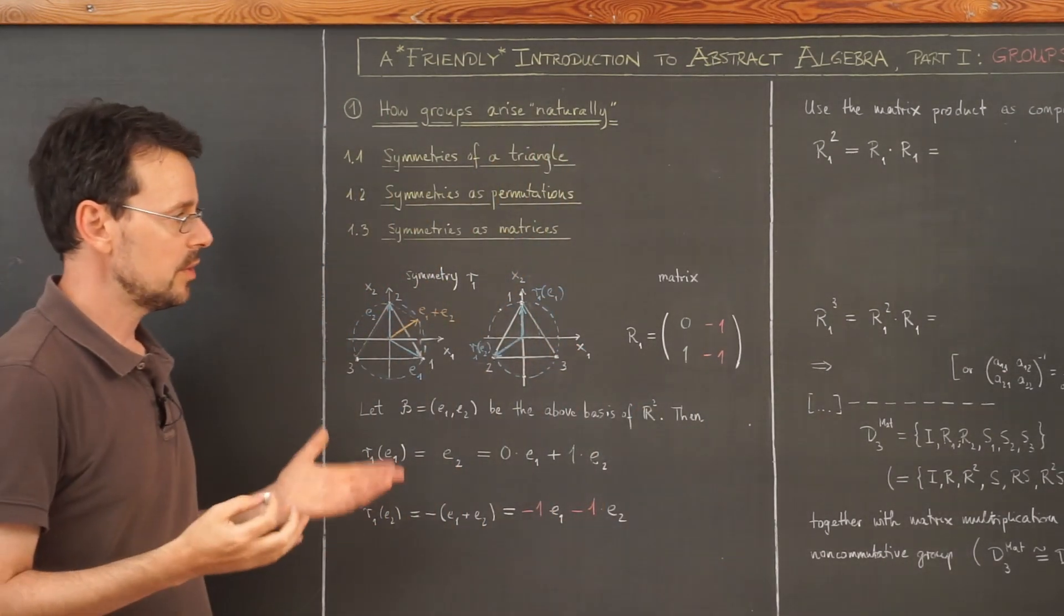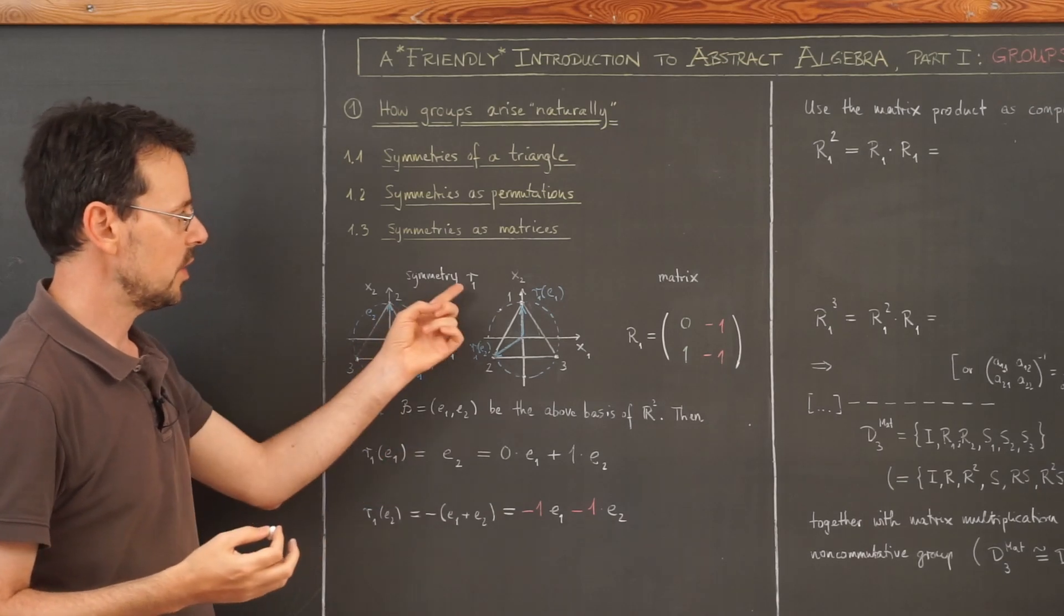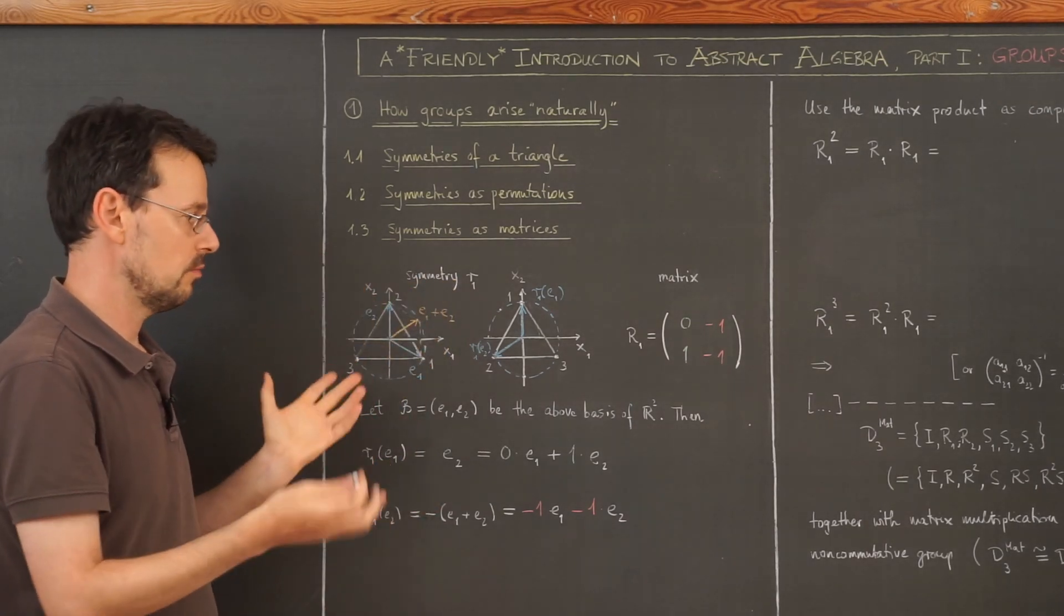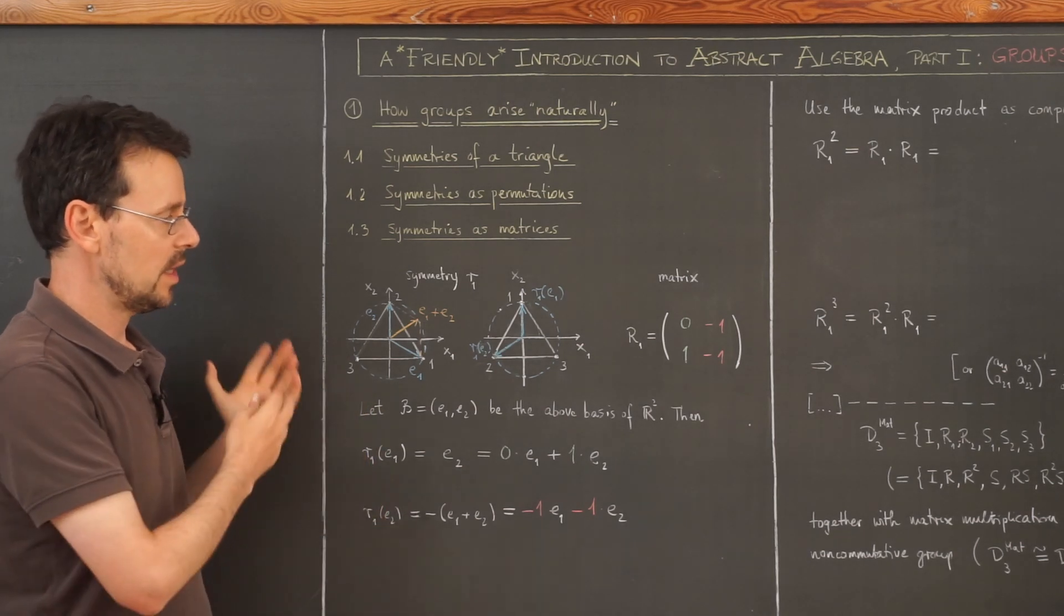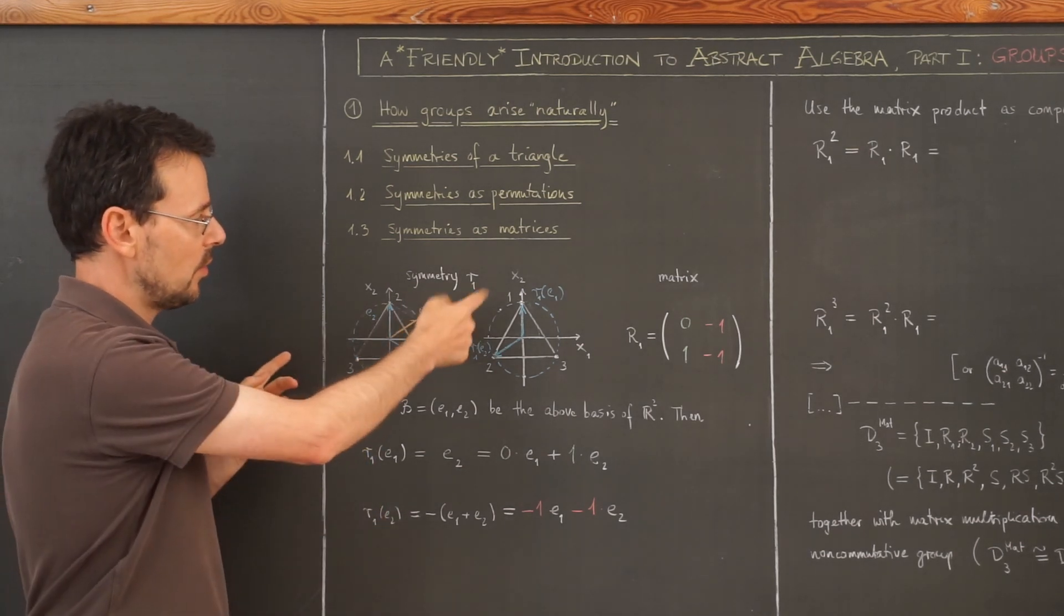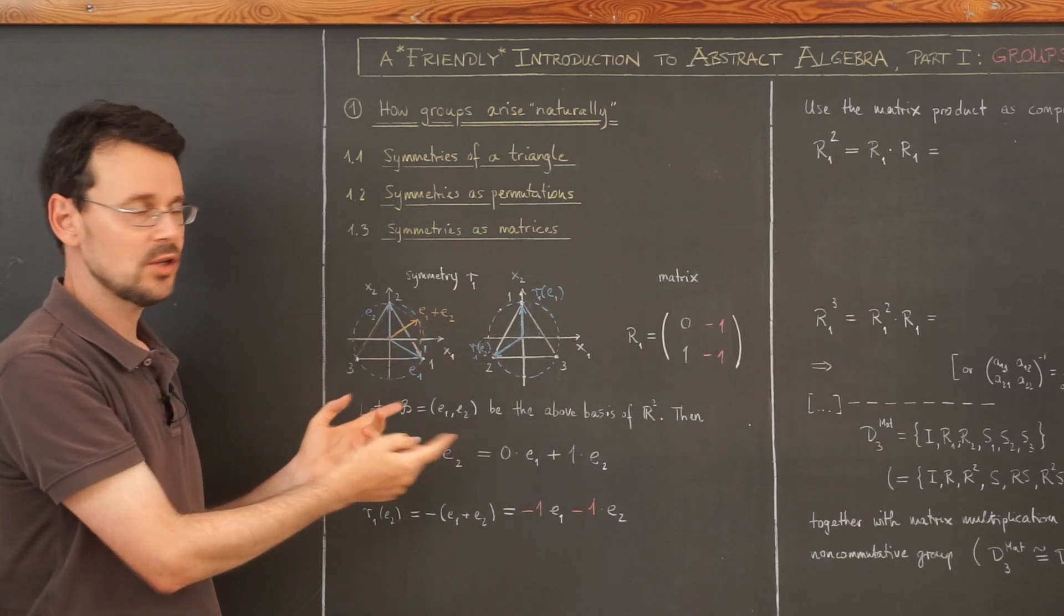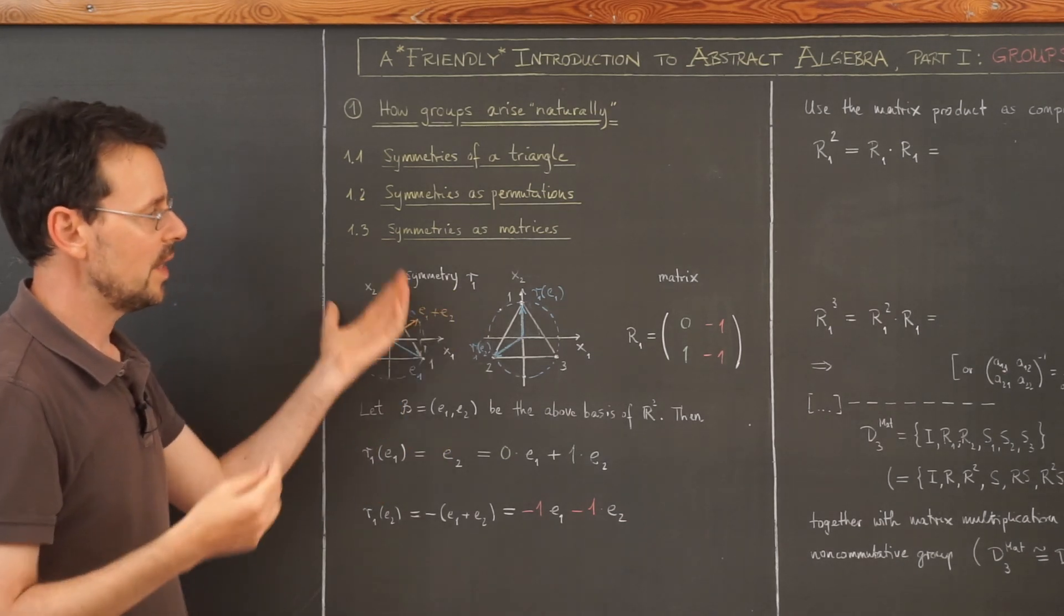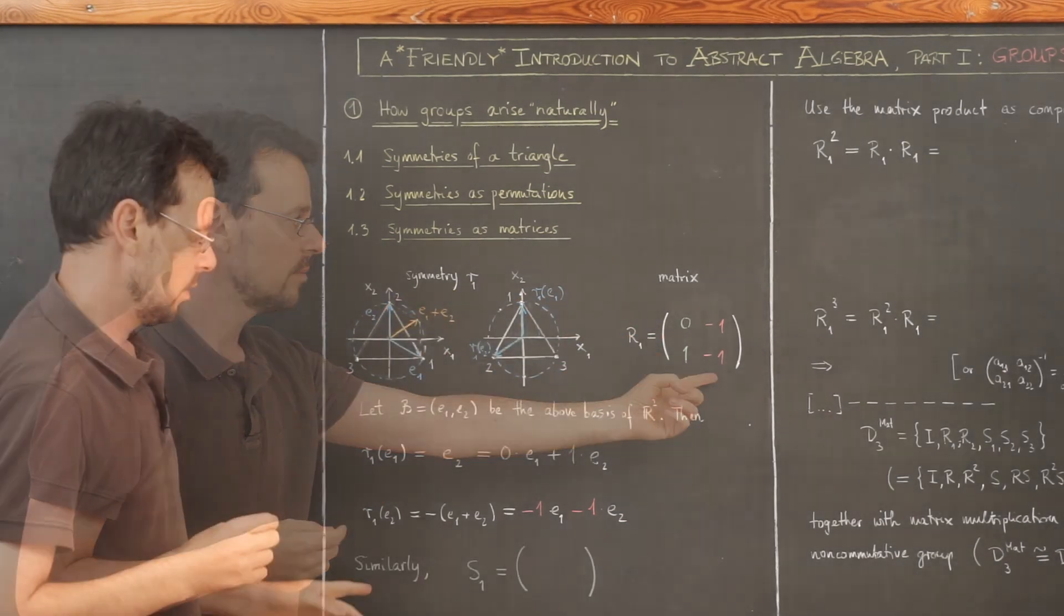And that's it. So I have found a new object that I can associate with this symmetry, which was some kind of movement of a triangle. Last week, we learned about how to associate a permutation to the symmetry. Now it's a matrix.